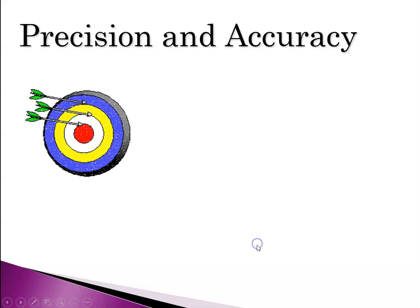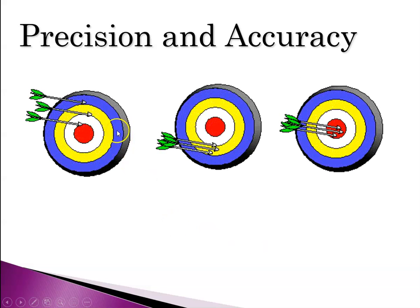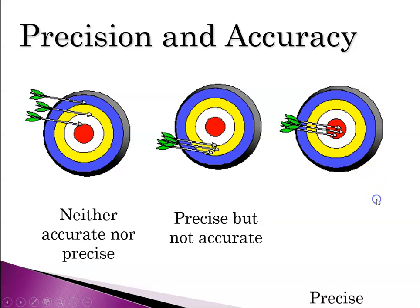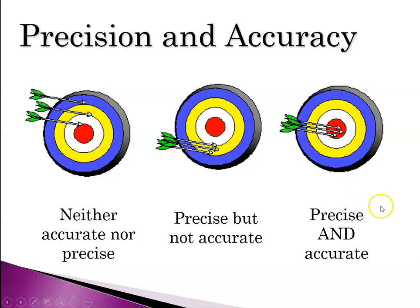Let's look at some examples using targets. We've got three targets, and we're trying to hit the red bullseye in the center. In the first case, the three arrows are not close together — not precise — and not close to the target, so neither accurate nor precise. In the middle one, they're close together so precision is good, but they're not accurate — not near the target. In the third case, they're close together and they are on target, so precise and accurate.